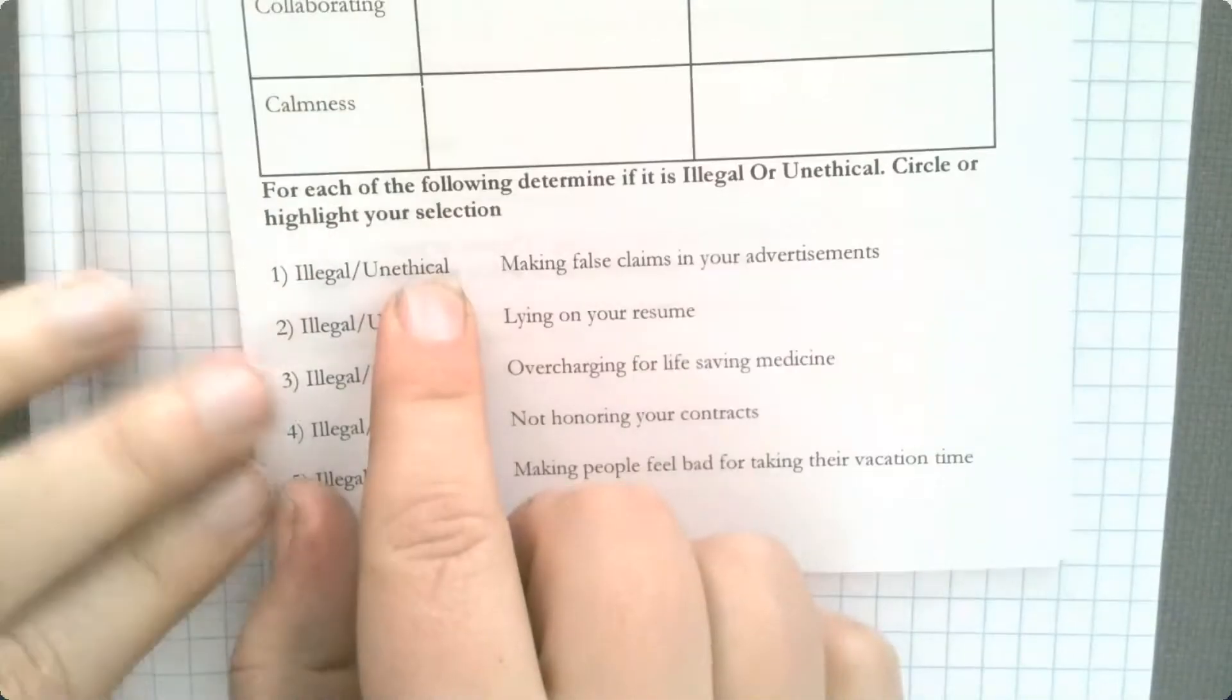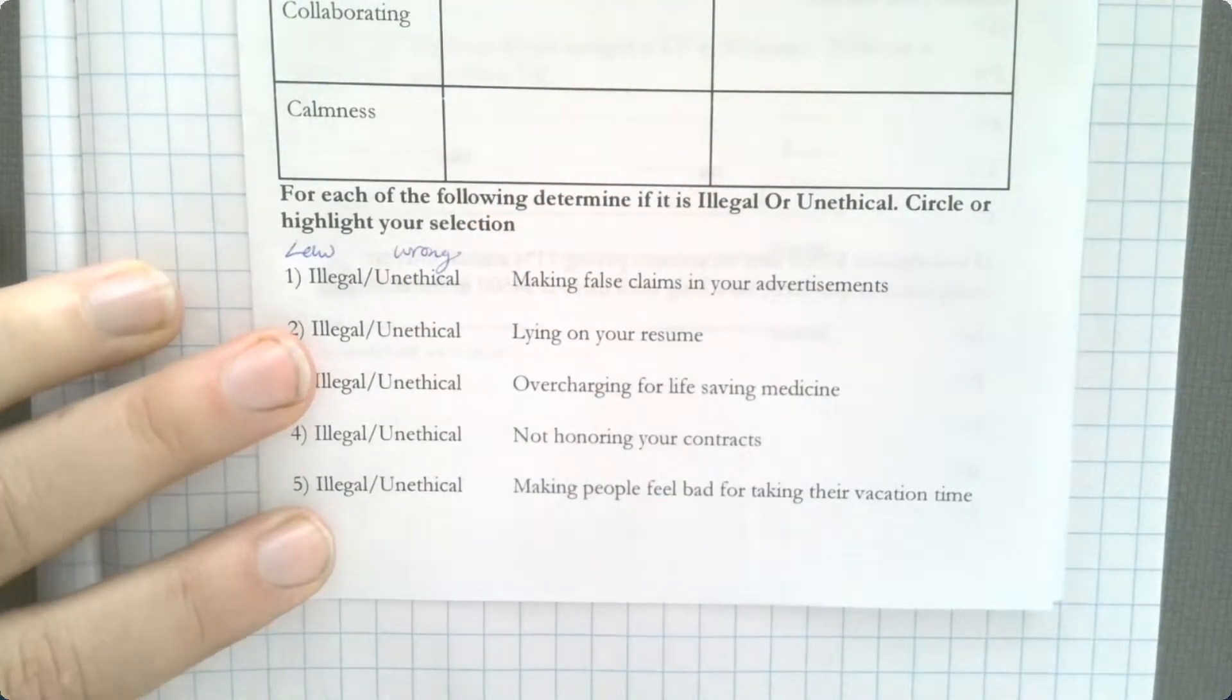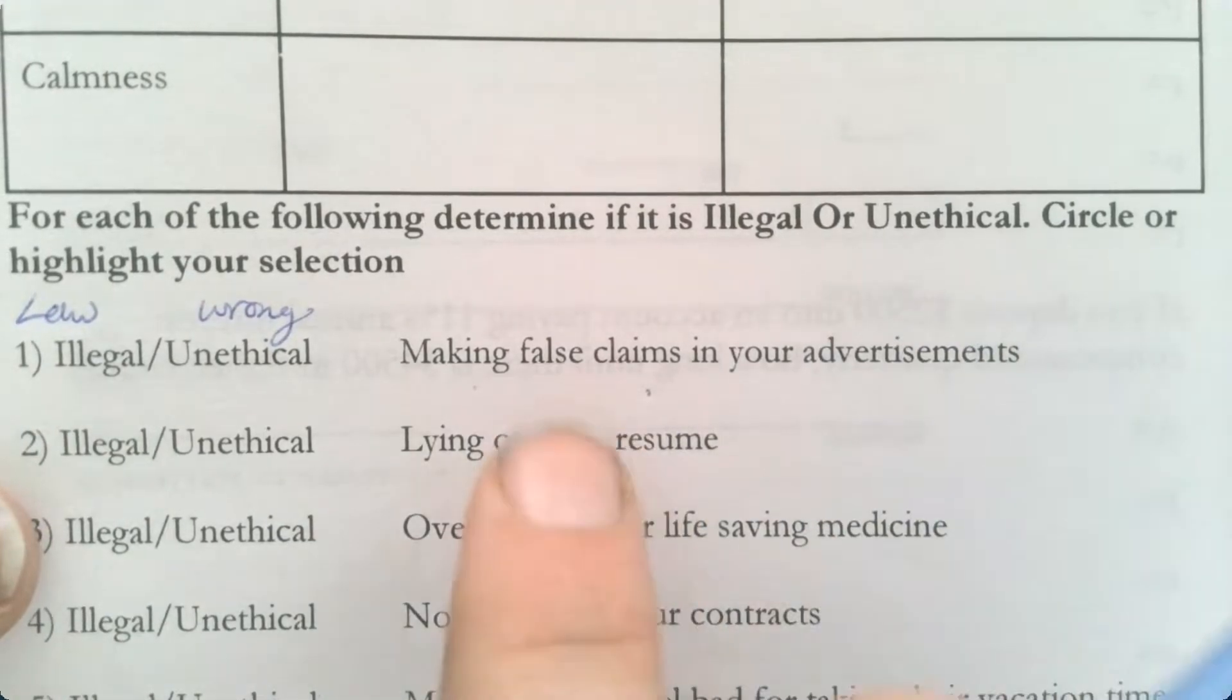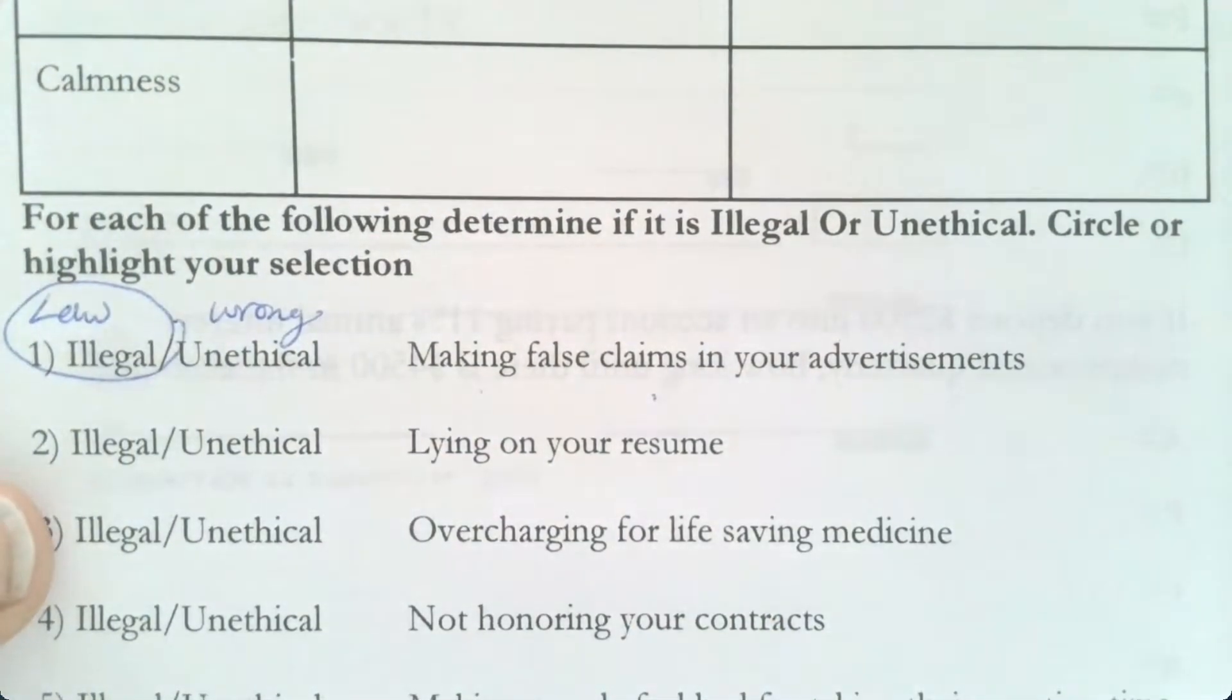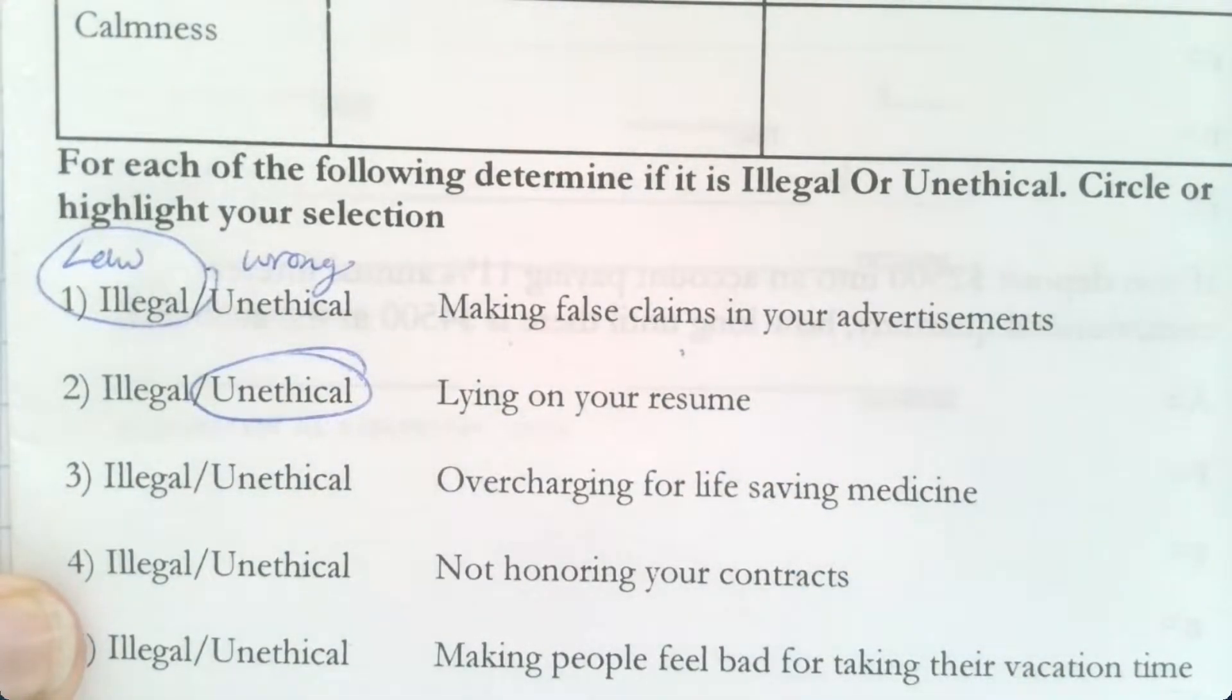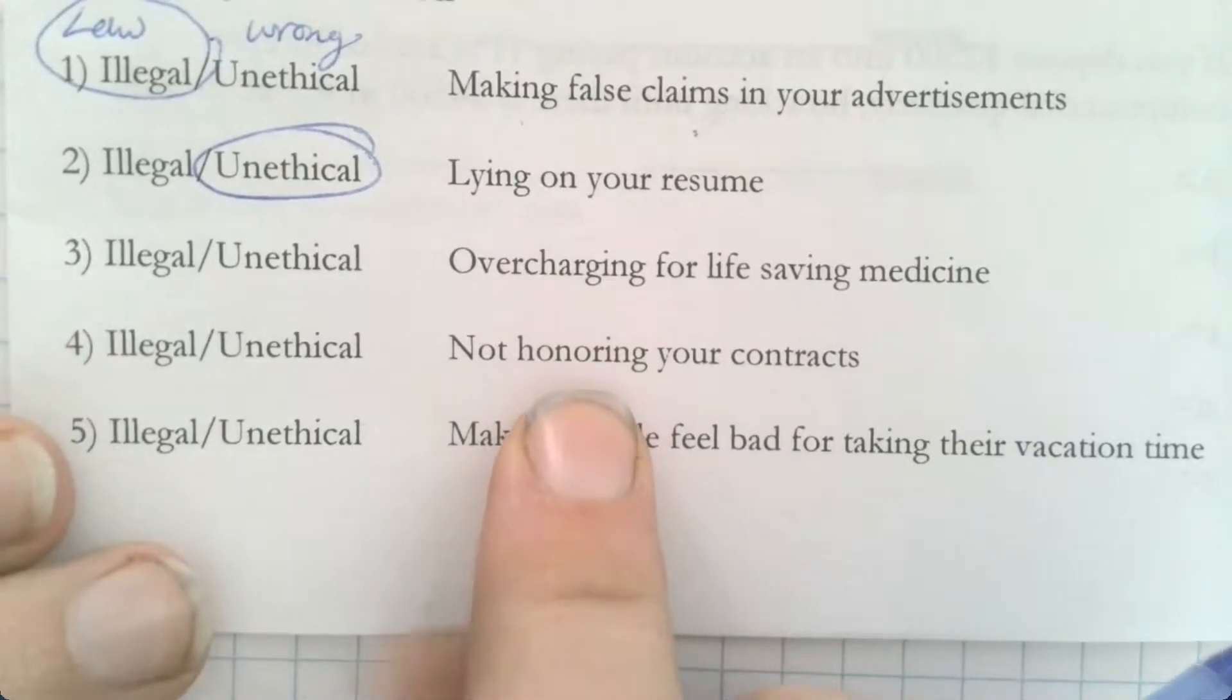Do we know the difference between illegal and unethical? Illegal is law, unethical is just wrong. So if a company makes a false advertisement, like let's say I have this miracle pill, if you take it it will cure everything you've ever had, you'll have no disease left anymore - is that illegal or is it just wrong? It's illegal. They're bound by their advertisements. Lying on your resume, is it illegal or wrong? Just wrong. Overcharging for life-saving medicine - they're allowed to, but you're a horrible company. Not honoring a contract?